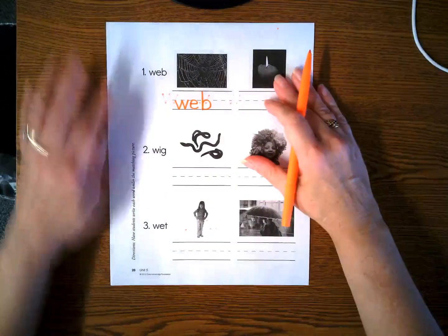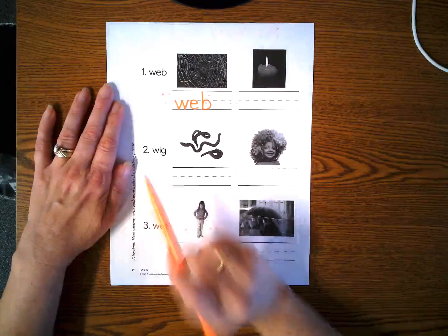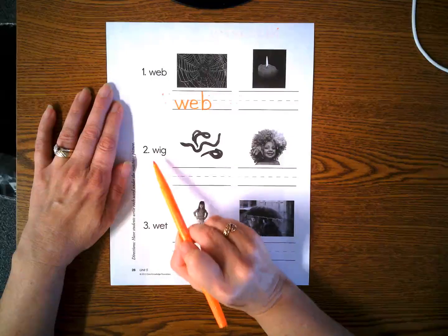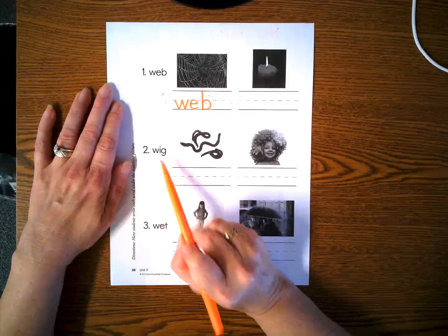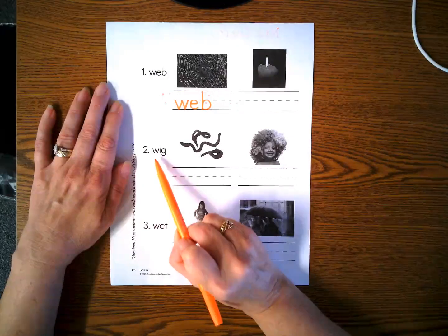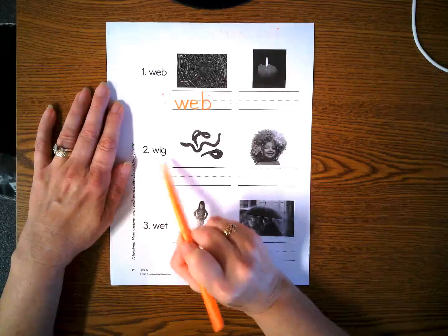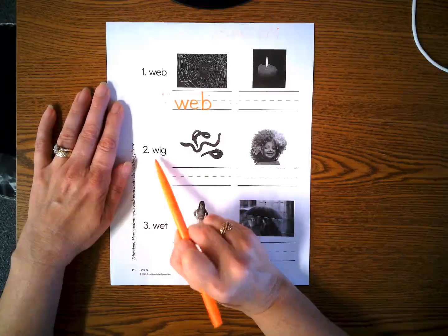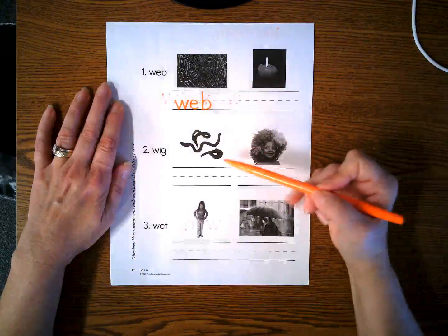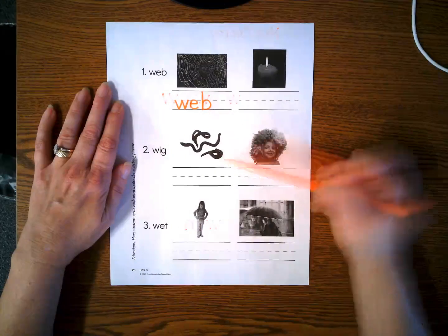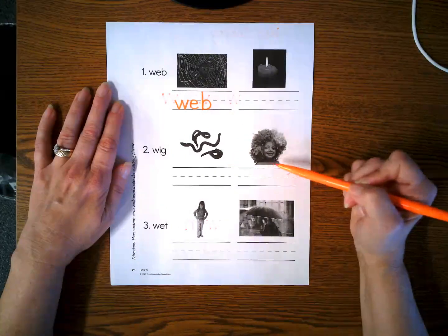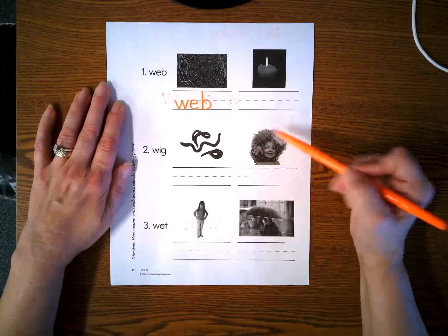Let's look at number two. Stretch this. W, e, g. Wig. Wig. Hmm. Those are worms. That's not a wig. This little child is wearing a wig.